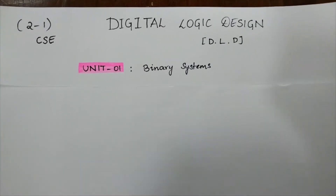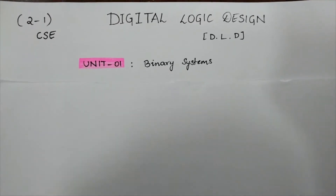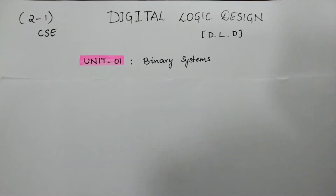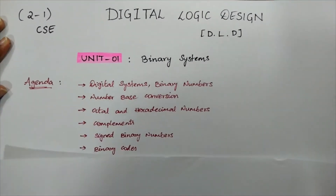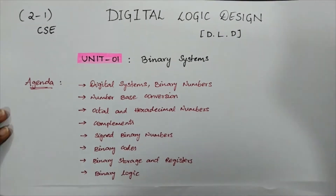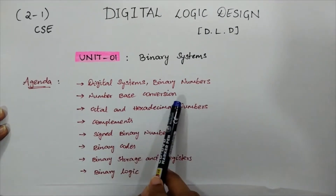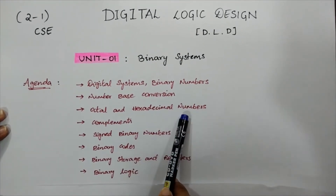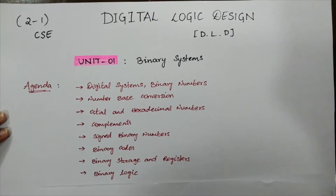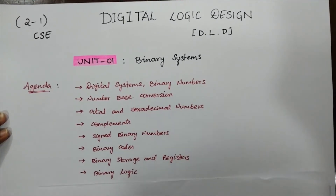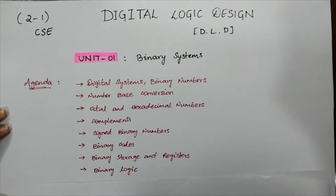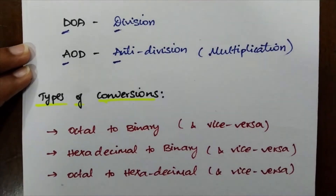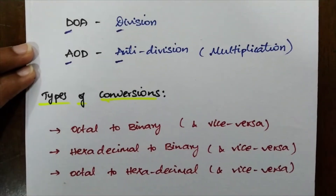Hello everyone, welcome back to Edumon Tutorials. This is our third lecture on DLD Unit One: Binary Systems. I'm Suhana Domtotti. As you have seen in the previous videos, we have already covered digital systems, binary numbers, and number base conversions. In this video we will be covering octal and hexadecimal numbers. We are going to split this video into Part A and Part B for easy understanding. The conversions we will cover are: octal to binary, hexadecimal to binary, and octal to hexadecimal and vice versa.